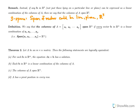By definition, the columns of A — A1, A2, ..., Ap — span Rm if every vector B in Rm is a linear combination of A1 to Ap. Equivalently, the span of {A1, ..., Ap} equals Rm.